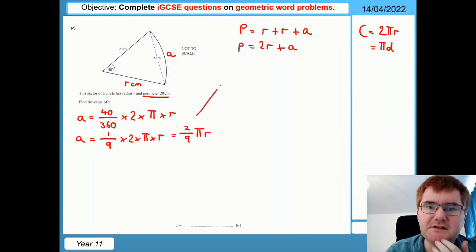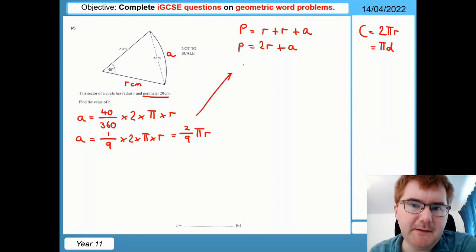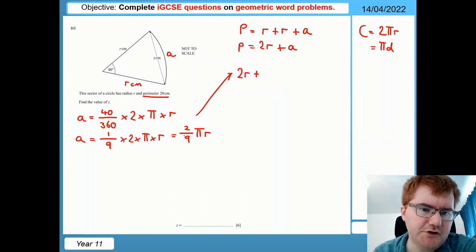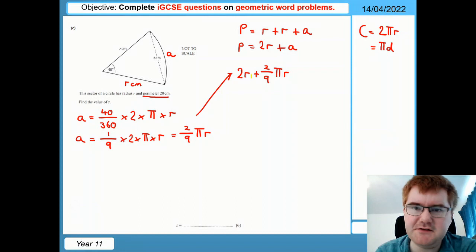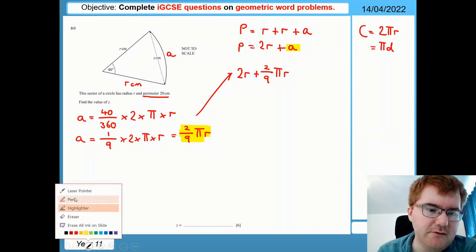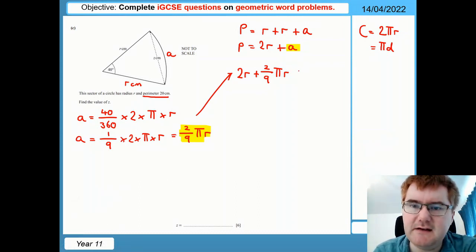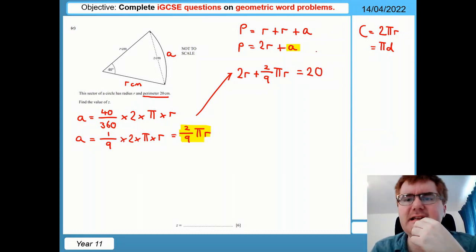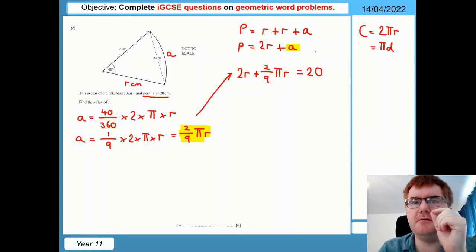So that's the first thing I'm going to do. I've now worked out what the arc is in terms of R. Now I go back to my formula and I go, well, I'm going to flip this over. So I've got 2R plus 2 ninths pi R. Because remember, wherever I see an A, I can replace that. I can replace that now with the answer we just worked out. So 2 ninths pi R. And we're actually told that the perimeter is equal to. So we're told that it's equal to 20, like so.